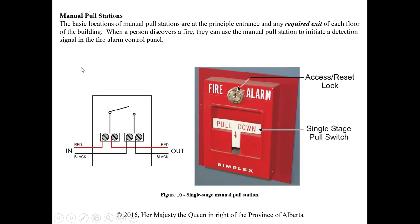Manual pull stations must be located at the principal entrance and any required exit, with the required exits determined by the classification of each floor. When a person discovers a fire, they use the pull station to initiate a detection signal at the fire alarm control panel. Pulling it down basically closes a switch, providing an alternative path for current flow instead of through the end-of-line resistor — it shorts out the device and puts the system into an alarm condition.